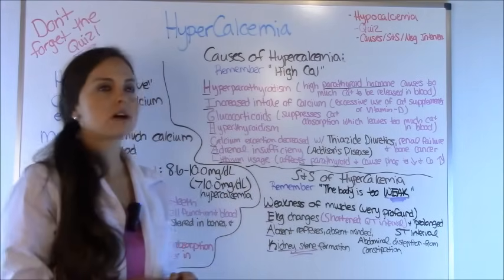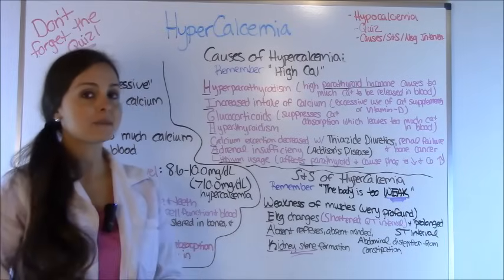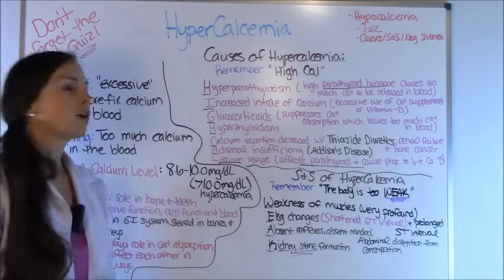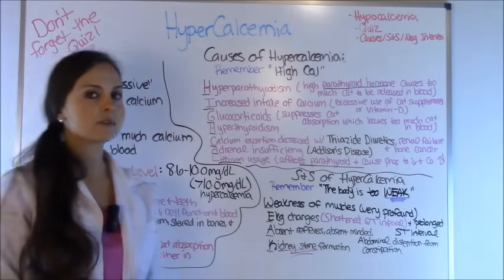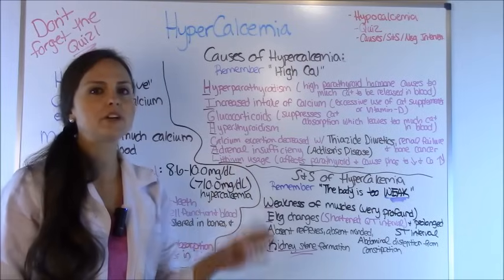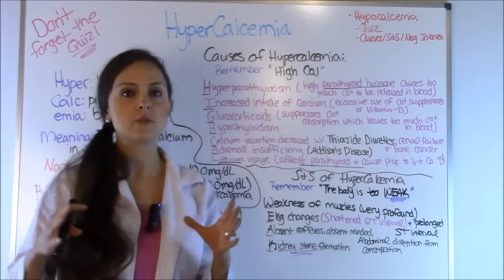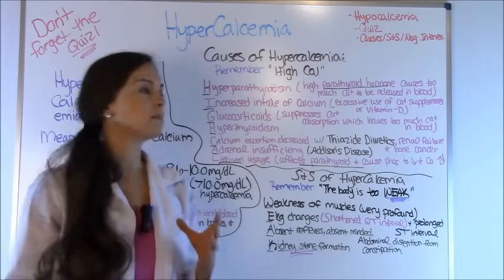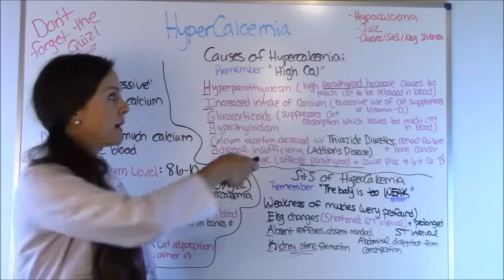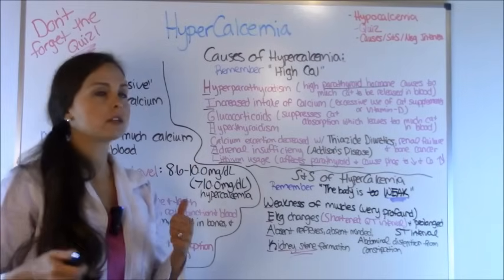So what are the causes of hypercalcemia? Try to remember the word HIGH CAL — we're talking about high calcium. Each letter represents a cause. H stands for hyperparathyroidism. Your parathyroid hormone plays a huge role in regulating calcium, and this is a huge thing exams love to test on. If anything has to do with the parathyroid, it deals with calcium as well. Hyperparathyroidism means an excess of parathyroid hormone, which causes too much calcium to be released into the blood, increasing your calcium levels.